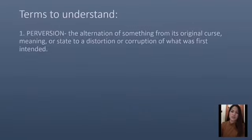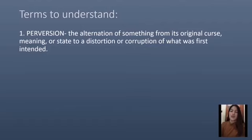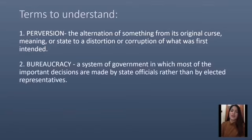The first term is perversion. When we say perversion, it is the alteration of something from its original course, meaning or state, to a distortion or corruption of what was first intended. The second term is bureaucracy, meaning a system of government in which most of the important decisions are made by state officials rather than by elected representatives.